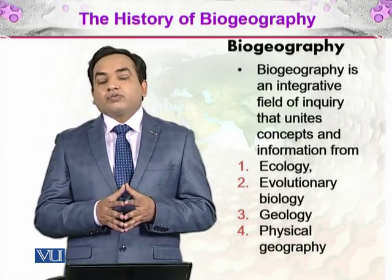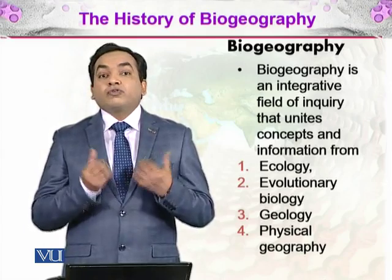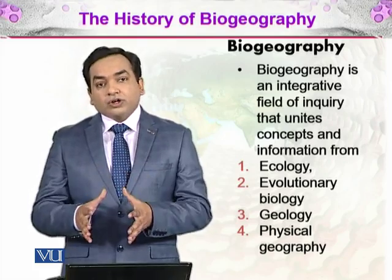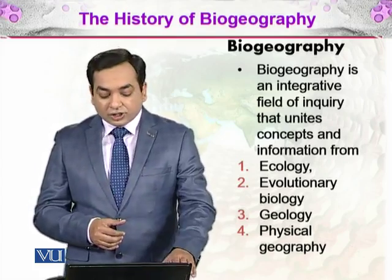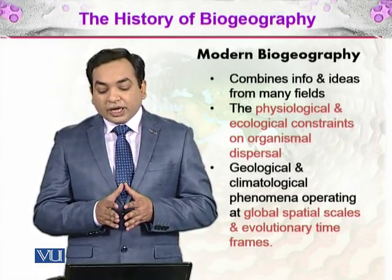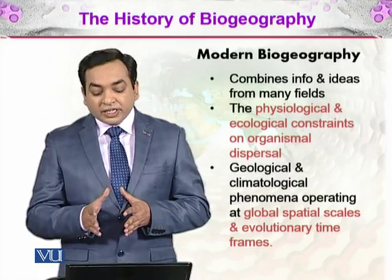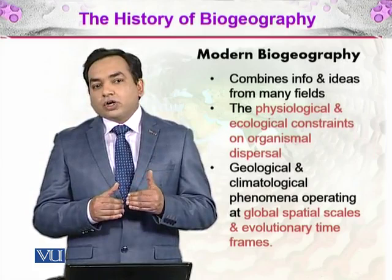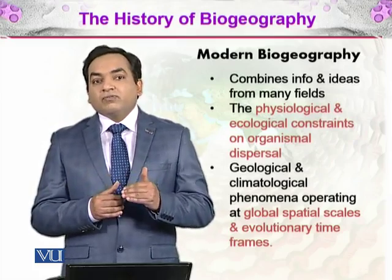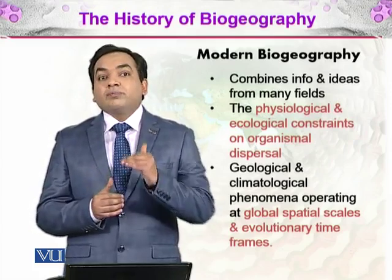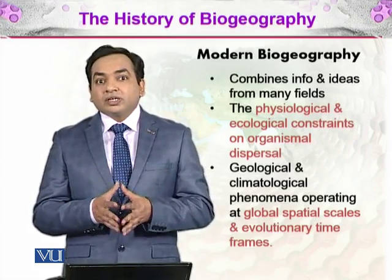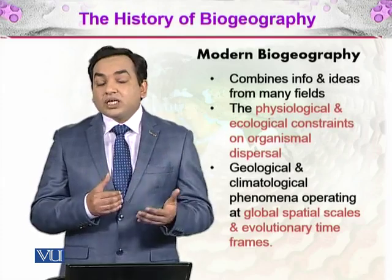Physical geography studies how different continents give rise to different species of organisms, and that is discussed in terms of biogeography. Modern biogeography combines information and ideas from many fields, including the physiological and ecological constraints on organismal dispersal. An organism cannot go beyond a certain temperature range. With global warming, organisms living in colder environments are being pushed further towards the poles — that is the physiological limitation. Ecological constraints include dependence on certain abiotic as well as biotic factors.